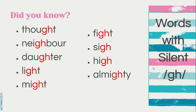Here are other examples — words with silent GH. We have: thought, neighbour, daughter, might, fight, sigh, and almighty. As you can see, there are GH in every word. However, we don't say the sound.